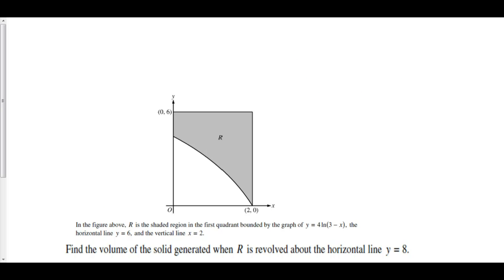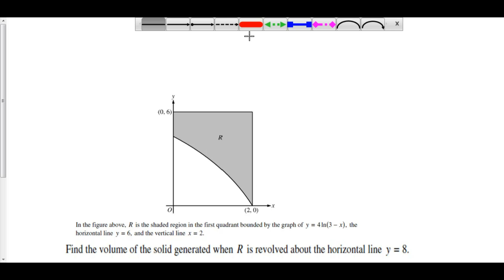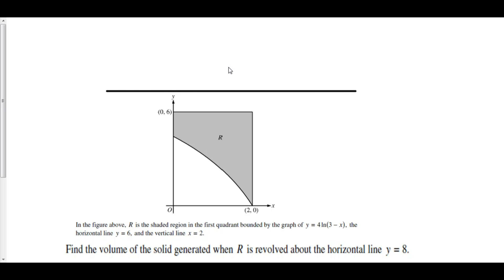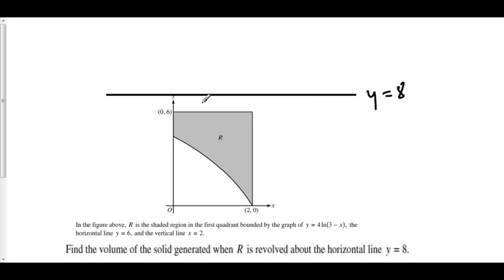In the figure above, R is the shaded region in the first quadrant bounded by the graphs of 4 times the natural log of (3 minus x), the horizontal line y equals 6, and the vertical line x equals 2. Find the volume of the solid generated when R is revolved about the horizontal line y equals 8. Because there's space between our axis of revolution and the region itself, we're going to use the washer method.